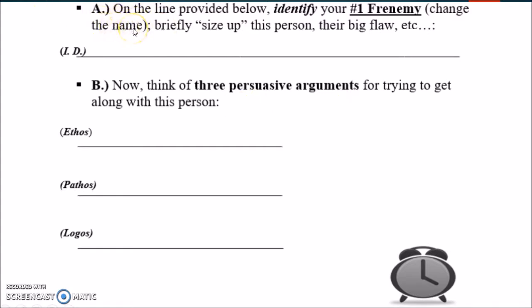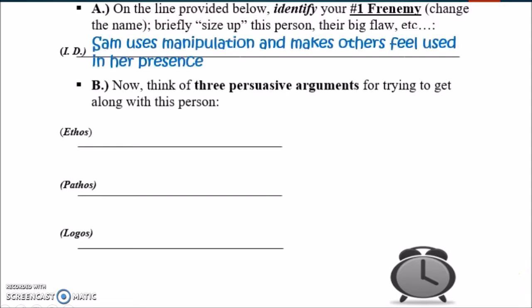Number one: on the line provided, identify your number one frenemy, change the name, briefly size up this person — their big flaw, what it is about them that you don't like. So a student said: Sam uses manipulation and makes others feel used in her presence. We've identified a frenemy and stated the reason why she was disliked. This is our issue — we've identified our issue.